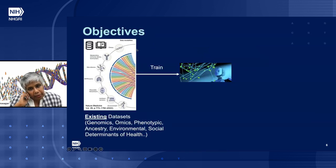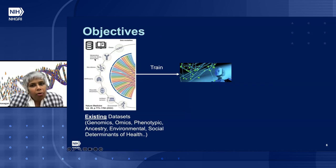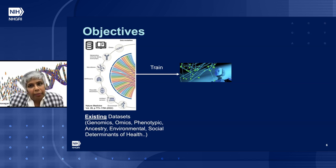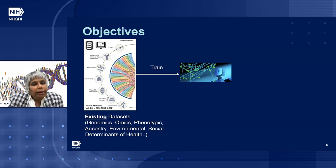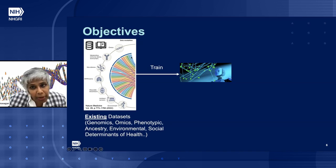Regarding the objectives: recently there has been increasing access to large multimodal and rich data sets including genomics, clinical, social determinants of health, and environmental data, increasingly available in a FAIR manner due to community use of standards. These data can come from diverse sources such as EHRs, public repositories, and biobanks. Advances in computing have made it possible to leverage these large data sets for successfully training MLAI tools.